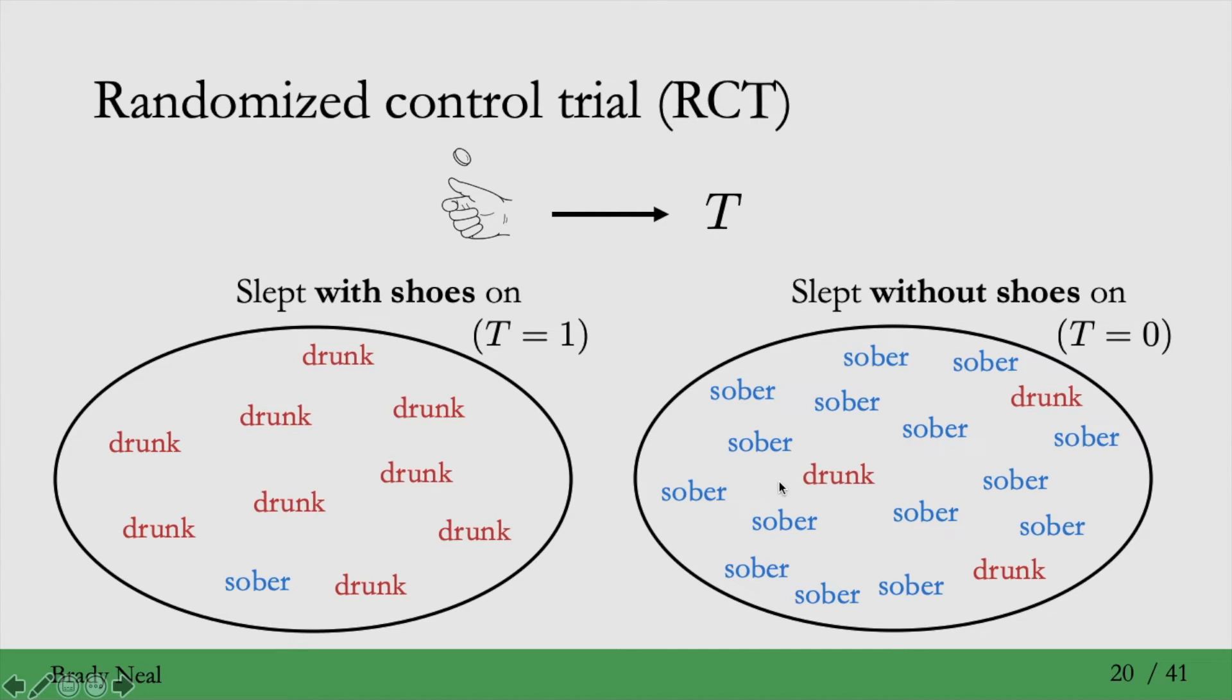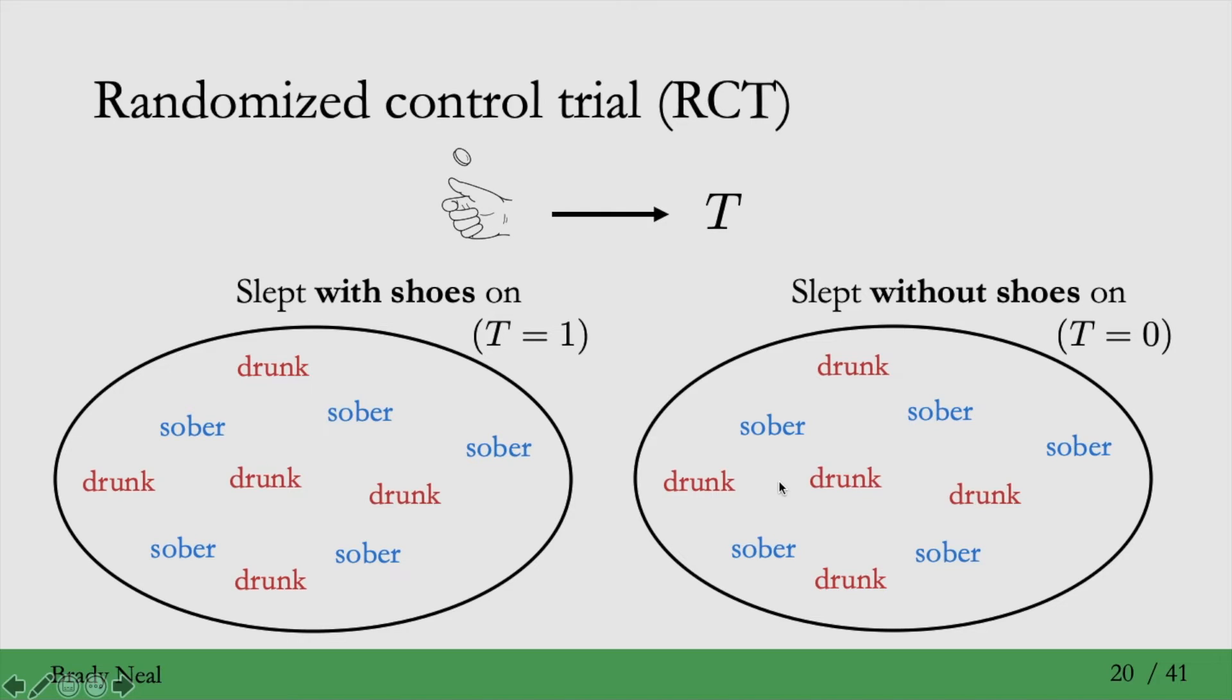And the effect that this would have is that it would make the groups totally comparable. So by running a randomized control trial, the experimenter has eliminated confounding.